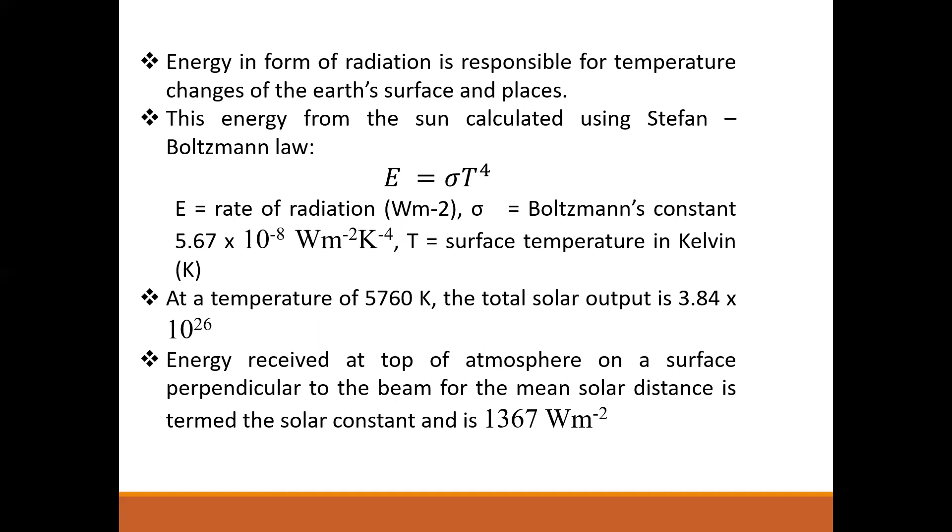When we standardize the parameters, we have the solar constant. The solar constant expressed in watts per square meter is the energy received at the top of the atmosphere on a surface perpendicular to a beam for the mean solar distance. This is the solar irradiation that strikes most surfaces on Earth.